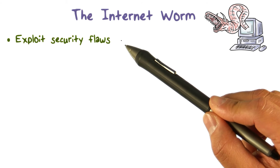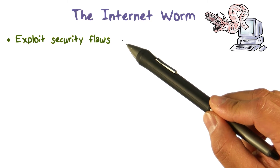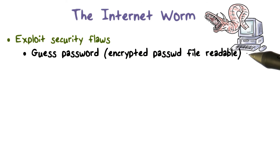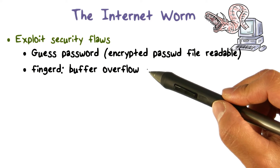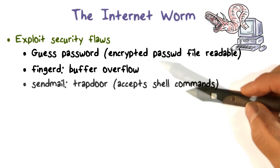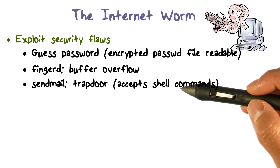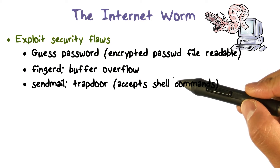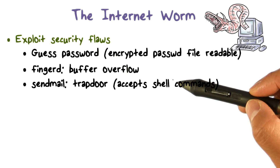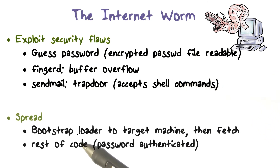When the internet worm identified the next target to infect, it looked for several security flaws that it knew how to exploit. These include systems with guessable passwords, systems running the fingerd program that had a buffer overflow vulnerability, and systems running the sendmail program that had a trap door — which means that by supplying some special input commands, one can gain access to these systems.